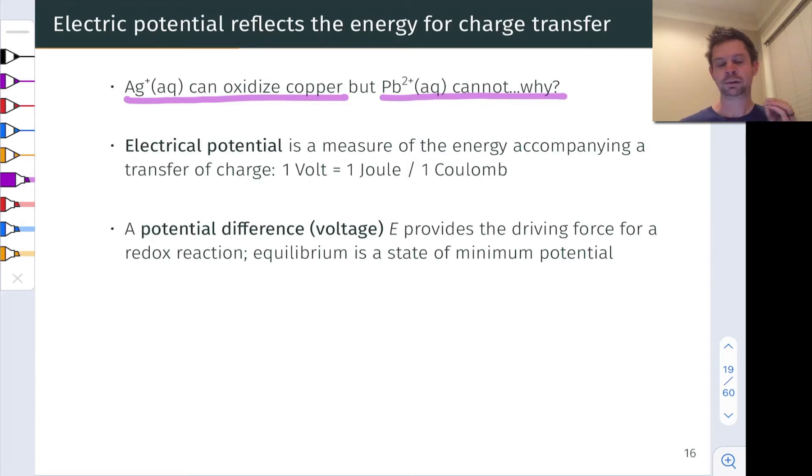Before we dig into that, let's define what we mean by electrical potential. Electrical potential is a measure of the energy that accompanies a transfer of charge. So if we imagine for example that we are transferring one coulomb of charge using an energy of one joule, the potential difference we've created in transferring that charge is equal to one volt.